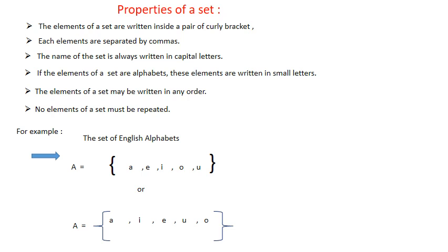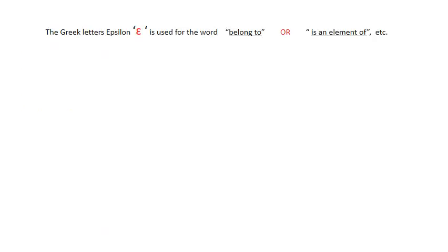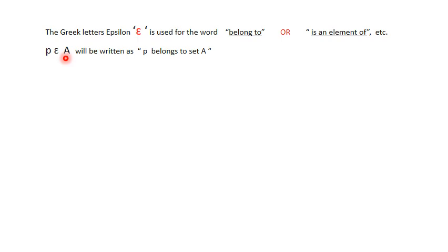The Greek letter epsilon (ε) is used for the word 'belongs to' or 'is an element of'. For example, P ε A is read as 'P belongs to A' or 'P is an element of A', where A is the name of the set written in capital letter.